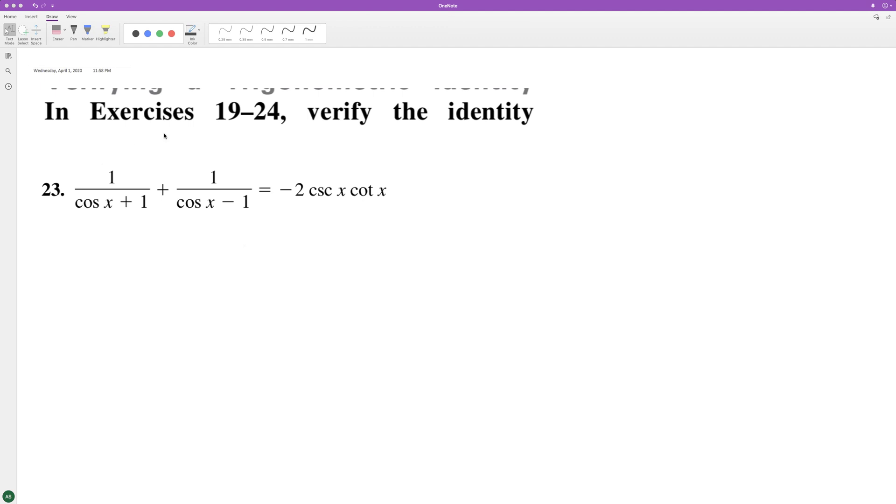Verify the following identity. So we'll do common denominators. We end up with cosine x minus 1 plus cosine x plus 1. And then when these are multiplied together for the common denominator, we get cosine squared x minus 1.